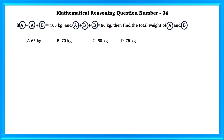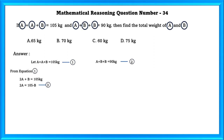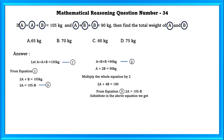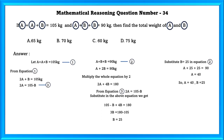Mathematical reasoning question number 34. If a + a + b = 105 kg and a + b + b = 90 kg, find the total weight of a and b. From equation 1: 2a + b = 105. From equation 2: a + 2b = 90. Multiplying equation 2 by 2 gives 2a + 4b = 180. Substituting 2a = 105 − b, we get 105 − b + 4b = 180, so 3b = 75, giving b = 25. Substituting b = 25 into equation 2 gives a = 40. Therefore a + b = 65 kg.